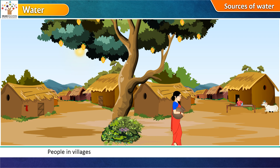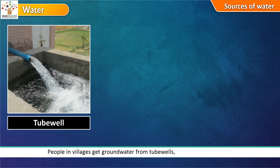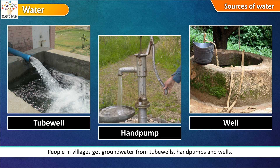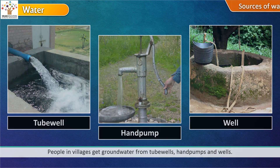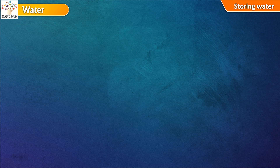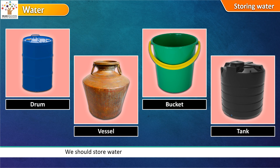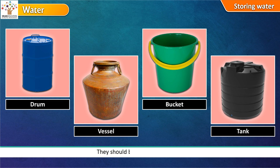People in villages get groundwater from tube wells, hand pumps and wells. Storing water: We should store water in drums, vessels, buckets and tanks. They should be clean and covered.